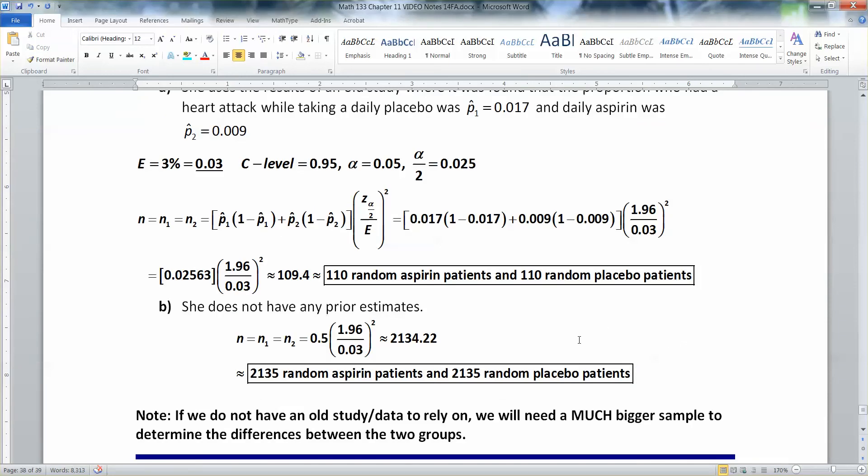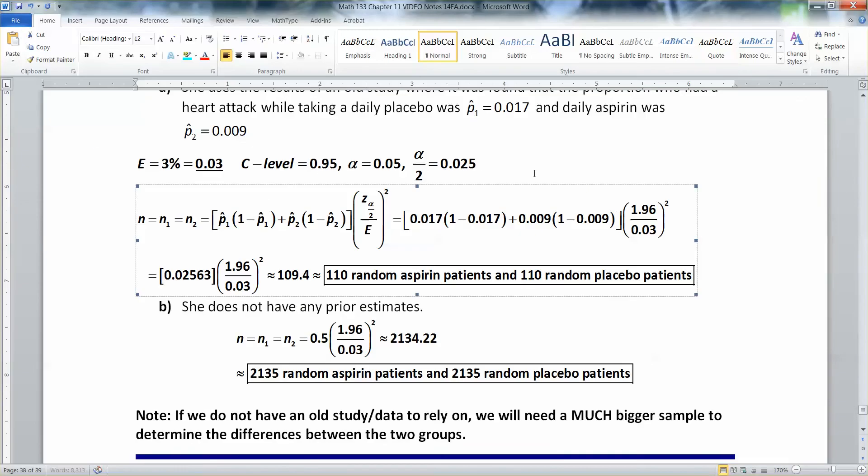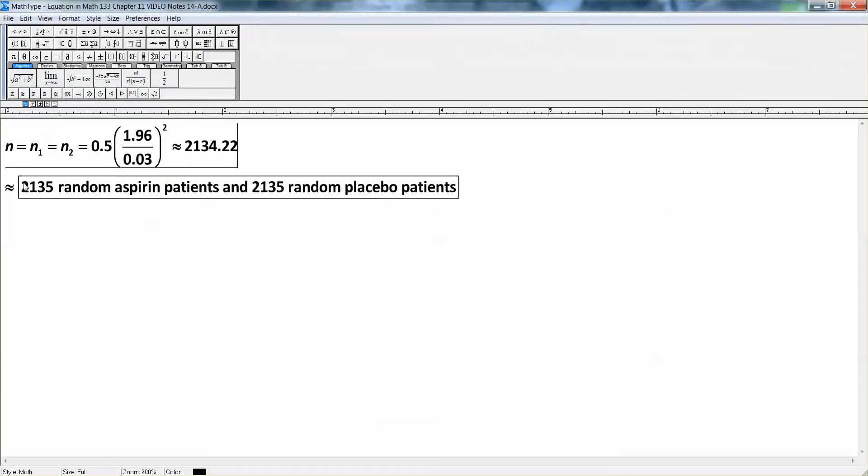And just to make this clear, you'll notice that when I found the 110, what I meant there was 110 of each type because it's n₁ and n₂. So you're going to need 110 aspirin patients and 110 placebo patients. And of course, they'll always have to be random. Otherwise, you're in big trouble anyway. When you have no prior estimate, you need so many more people. So you need 2,135 aspirin patients and 2,135 random placebo patients.